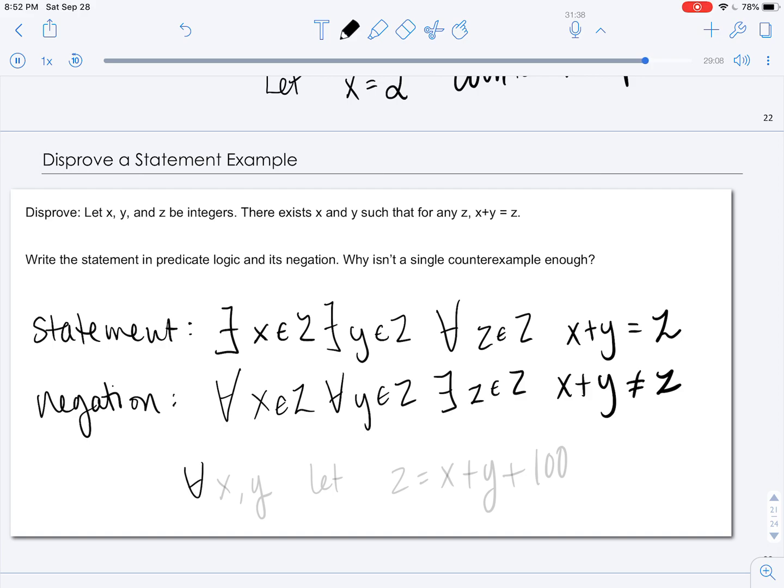So we're going to say for any x and for any y, let z equal x plus y plus 100. In this case, for any integers x and y, z will never equal their sum. So that is how we could construct essentially an algorithm to show that the negation is true.